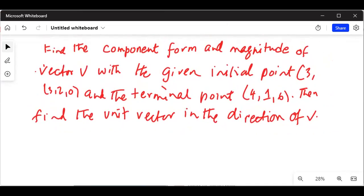Find the component form and magnitude of the vector V with the given initial point (3,2,0) and terminal point (4,1,6). Then find the unit vector in the direction of V.